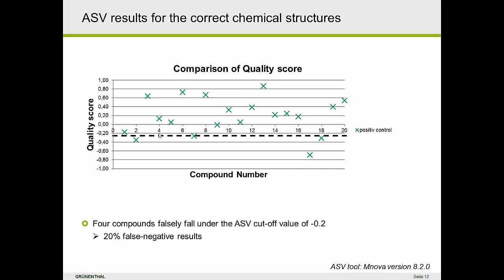For the analysis done with Mnova version 8.2 — an older version available at that time — we get about 80% of the substances scoring above the threshold, meaning the chemical structure is predicted correct. But we have four substances where the prediction says the chemical structure is or might be incorrect. Those would need double-checking by the user — just counting hydrogen integrals and counting the CH groups in the HSQC — which wouldn't take very long and could be done by a non-expert user.